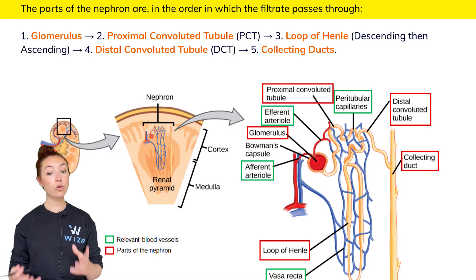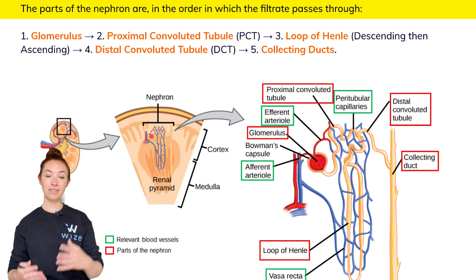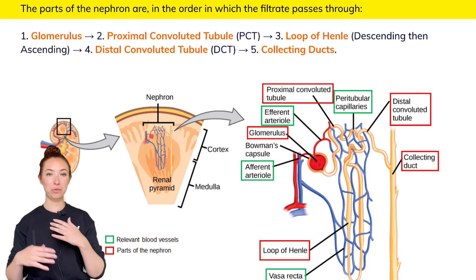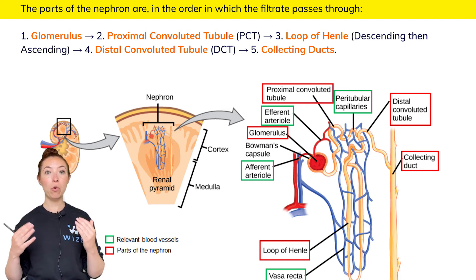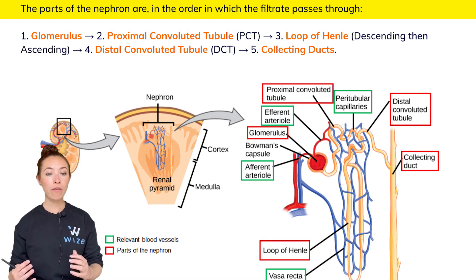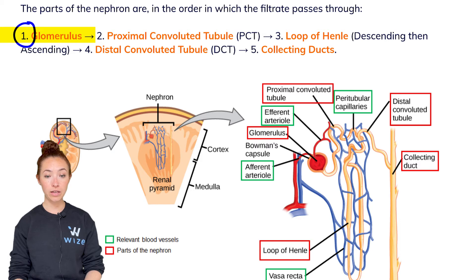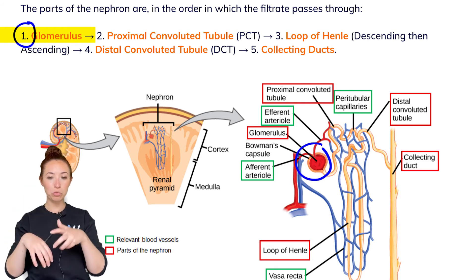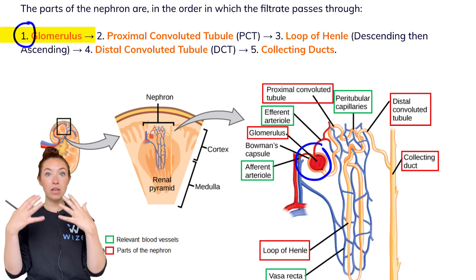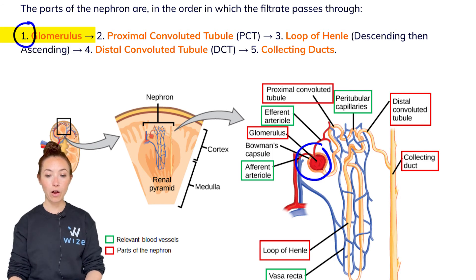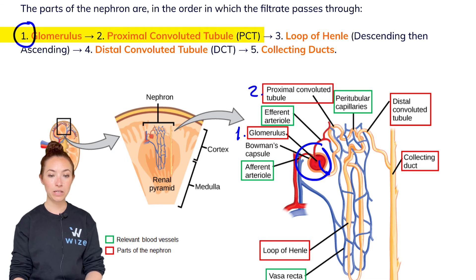Now let's go through the parts of the nephron — this is super important for the MCAT. I'll give you a broad overview of the sequence, and as you go through the individual parts, make sure you have the order down. Everything starts at the glomerulus — the onion-looking part where a convoluted capillary allows fluid to be filtered from the capillaries into the nephron. From the glomerulus, filtrate goes into the proximal convoluted tubule, or PCT.